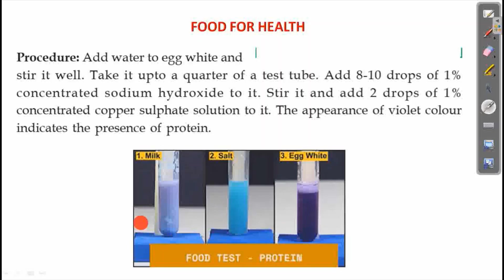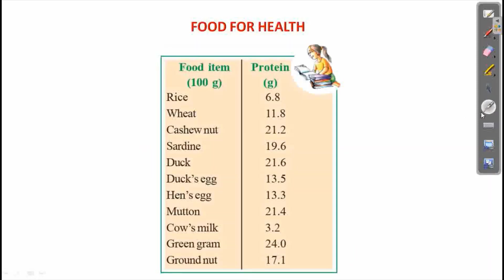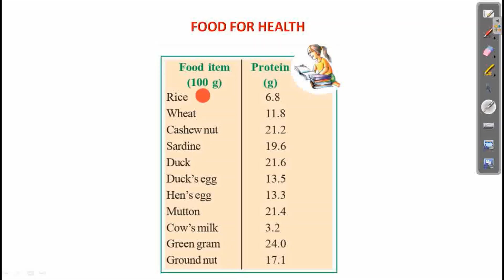We will test this in our food items. Which are the different food items which contain protein? In rice, we have 6.8g of protein; wheat, cashew nut, sardine, duck, hen, mutton, cow's milk, green gram, groundnut. In rice: 6.8g; wheat: 11.8g of protein.